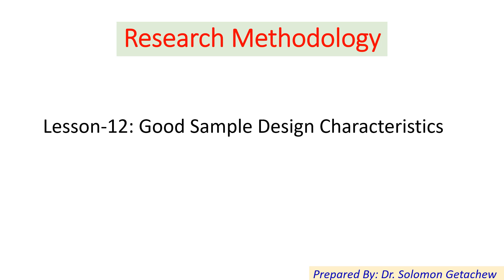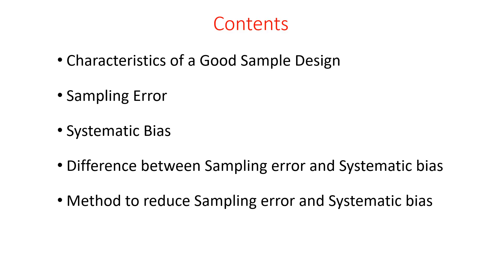Hello everybody and welcome to lesson 12, Good Sample Design Characteristics. In this particular lesson we will try to cover the following subtopics: characteristics of good sample design, sampling error, systematic bias, difference between systematic bias and sampling error, and methods to reduce sampling error and systematic bias.